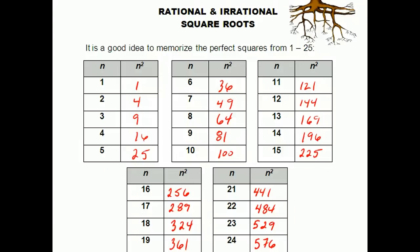Let's take a look at rational and irrational square roots. Before we get to the rational and irrational part, we should figure out what an actual square root is first. Here we've got our first 25 perfect squares, and these are something that you should get familiar with and memorize because we're going to be using them to simplify our rational and irrational square roots later on.